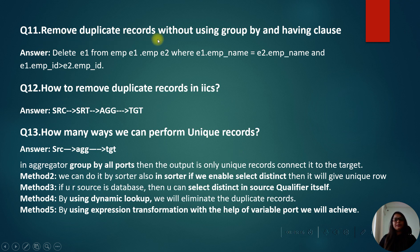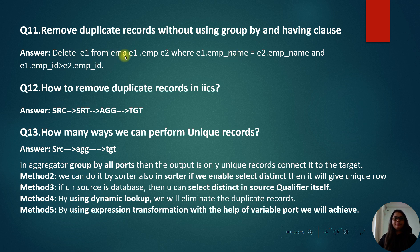Remove duplicate records without using GROUP BY and HAVING clause. The answer uses a self-join with aliases e1 and e2 on the employee table: DELETE e1 FROM employee e1, employee e2 WHERE e1.employee_name = e2.employee_name AND e1.employee_id > e2.employee_id. This removes the duplicate records by keeping only the row with the smaller employee ID.